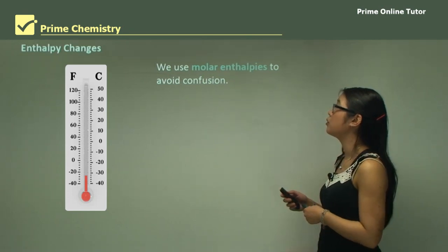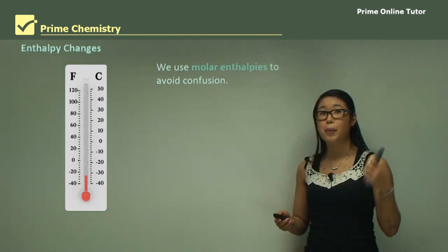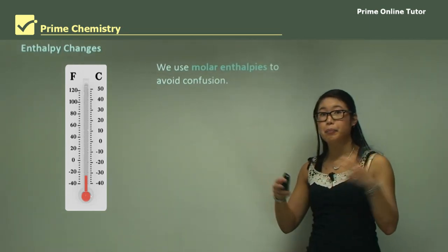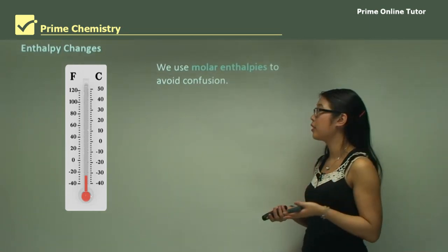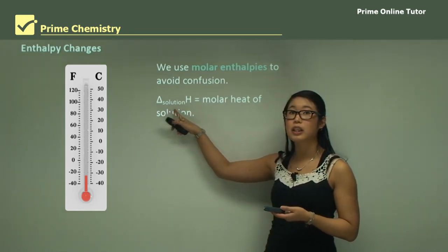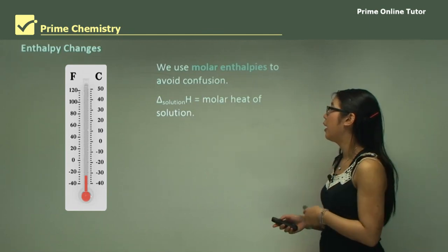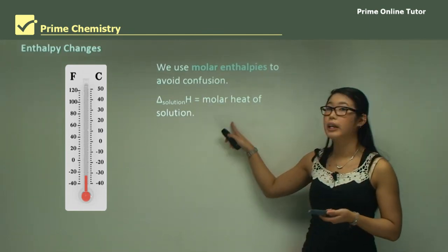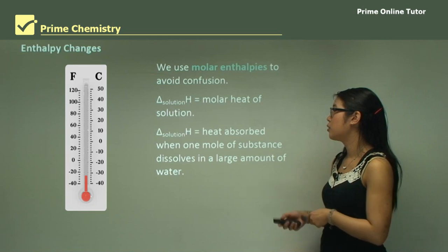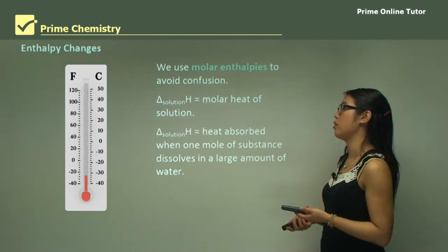We'll use molar enthalpies to avoid confusion. Molar enthalpies means we're looking at enthalpy per mole. We write this as delta solution H, instead of just delta H, and this always means the molar heat of solution — the heat absorbed when one mole of substance dissolves in a large amount of water.